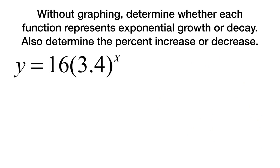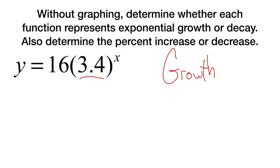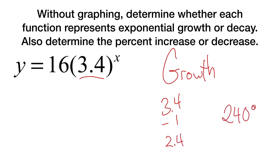Now let's try this one. This is way more than one, which means it is definitely growth. So I would do 3.4 minus one — that is 2.4, or two hundred and forty percent.